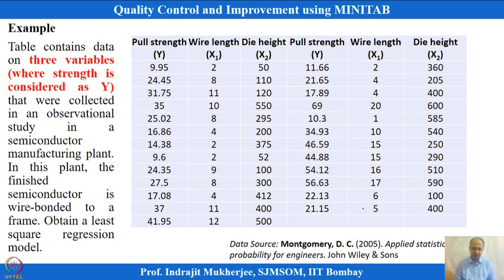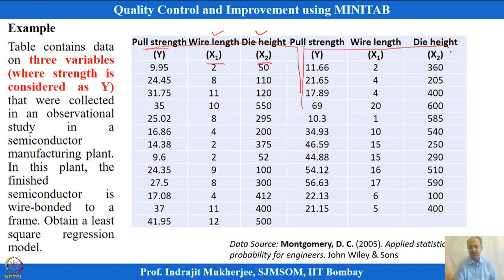MINITAB performs this estimation automatically. One example we are taking is pull strength, and we want to see whether wire length and die height are related to it. These are the two x variables. We have multiple observations and want to determine whether both variables are important, whether only one is sufficient, and how to develop the model.